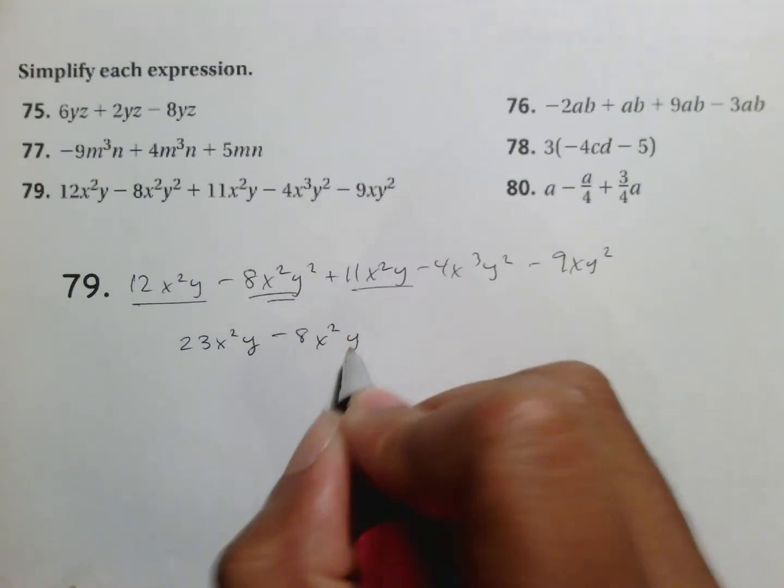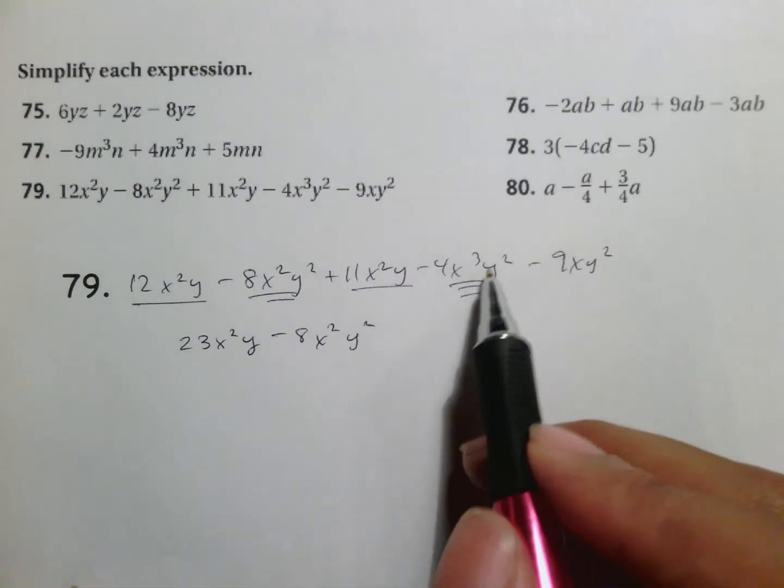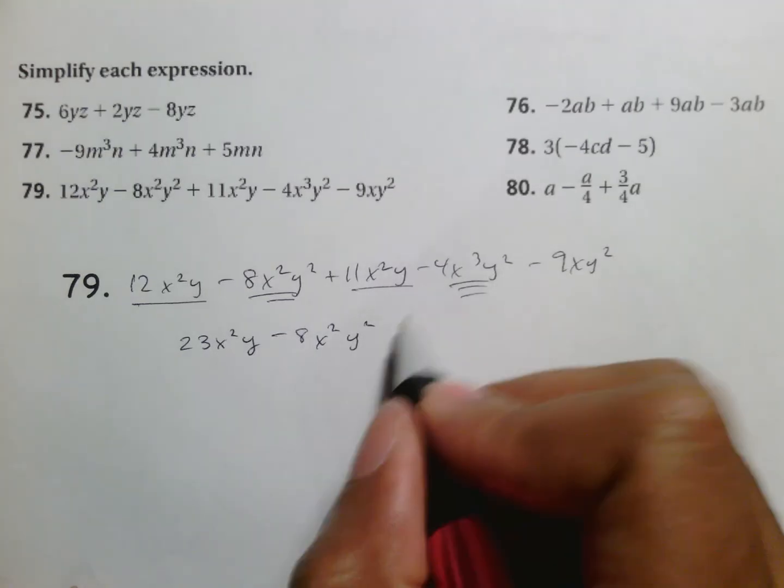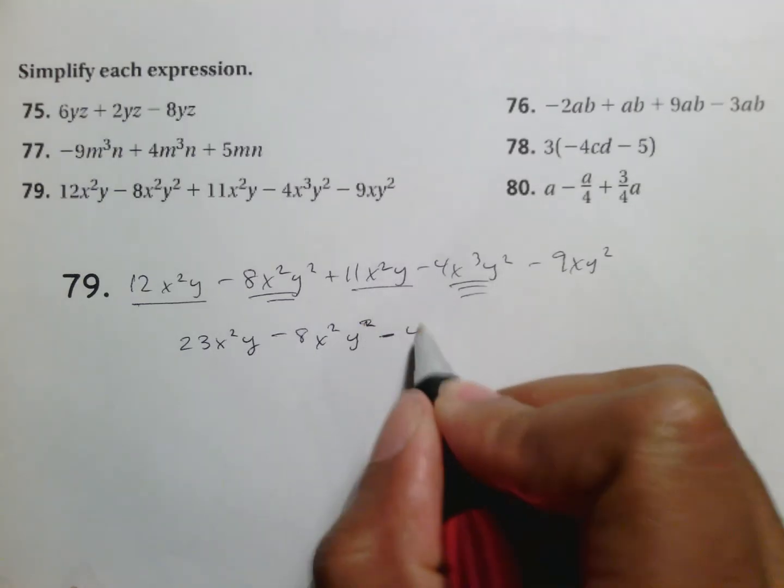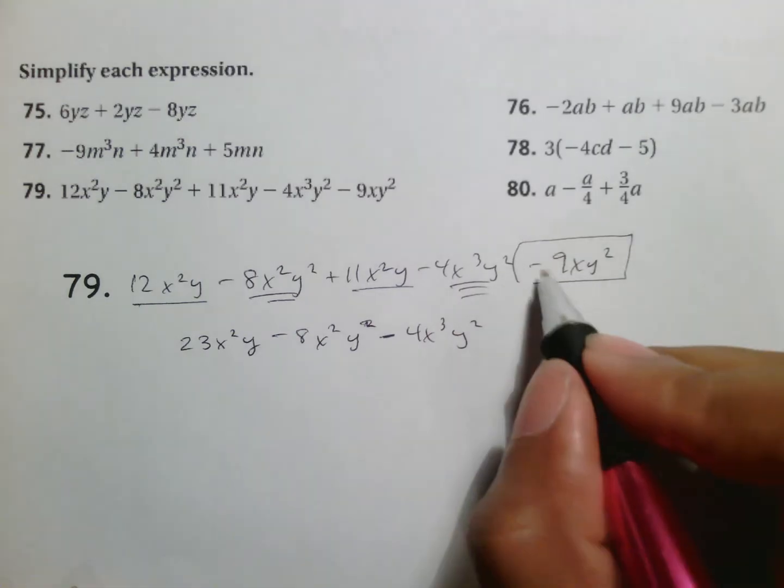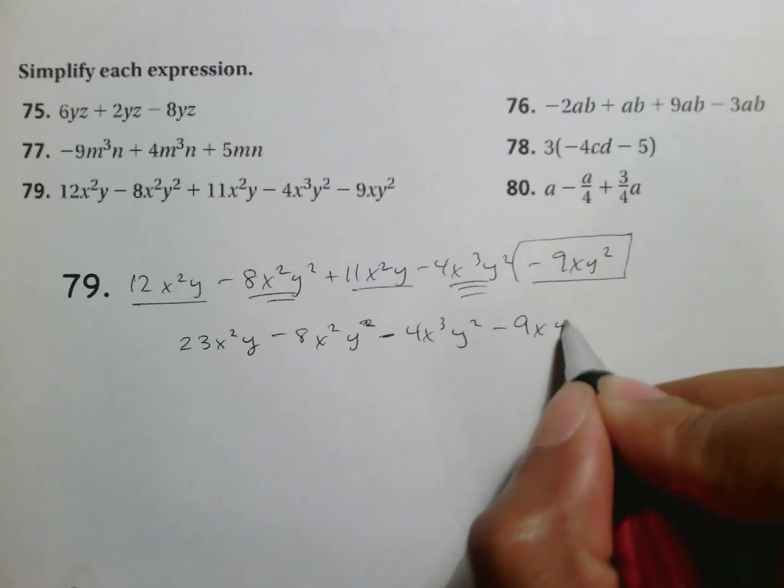If nothing goes with it just bring it down. And then I use a triple line. 4x³y². Those are still different. If it's there still bring it down the way it is. And don't forget it's going to be a negative 4x³y². And then if necessary I box the last one including the sign. There's nothing to match that. So bring it down 9xy².